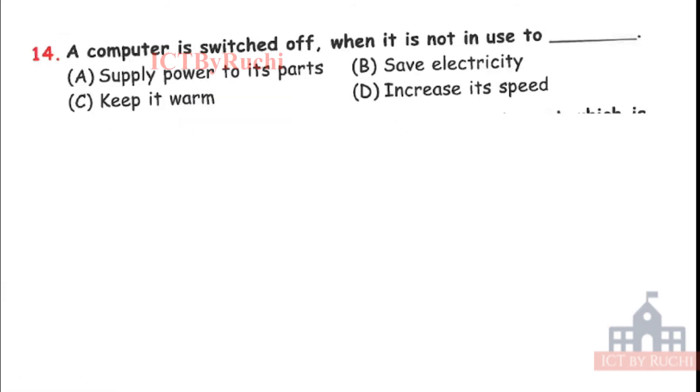Next question. A computer is switched off when it is not in use to: Supply power two parts, save electricity, keep it warm, or increase its speed. Tell me the answer first. Answer is B. Save electricity. Okay.